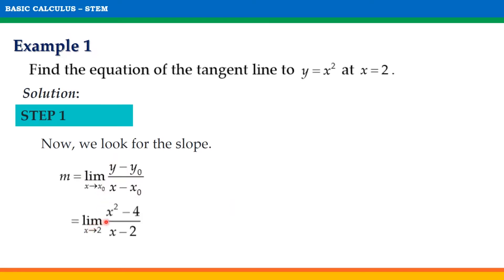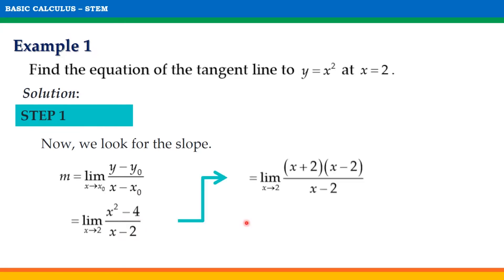Thus, we will have the limit of x squared minus 4 divided by x minus 2 as x approaches 2. When we substitute 2 into the denominator, it becomes 0. Before substituting, since we have a rational function, we check if it can be simplified. The numerator factors as (x plus 2)(x minus 2), and we can cancel the common factor x minus 2. Therefore we have the limit of x plus 2 as x approaches 2. Substituting 2 for x, we get m equals 4.